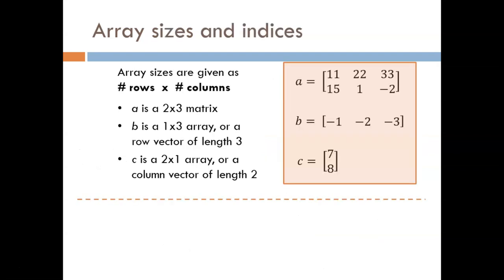Array sizes are given as the number of rows by the number of columns. How can you remember which is which? I think of architecture. Columns go up and down. So we can see that variable A has two rows and three columns. This makes it a two-by-three matrix.